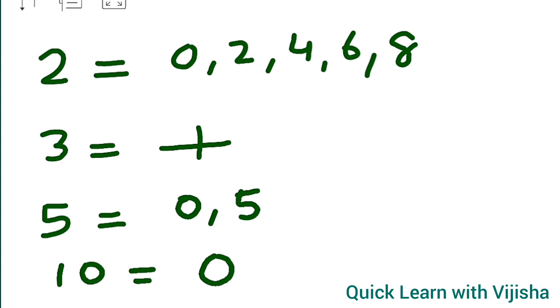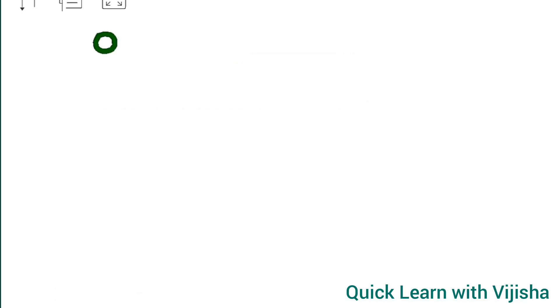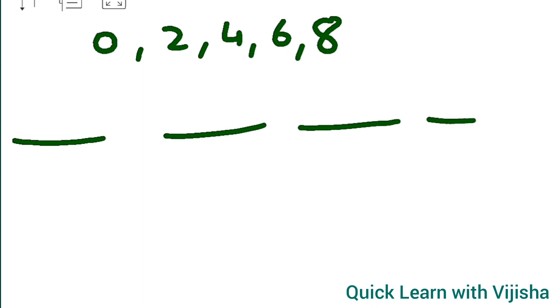Now coming to the topic. The first question is: write 5 three-digit numbers that are multiples of 2. We need to find multiples of 2 — for that, the units place should have the value 0, 2, 4, 6, or 8. With the help of this rule, we will write our answers. We need to find 5 such numbers.